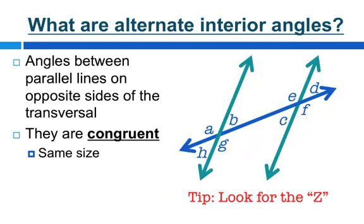The first thing we have to know is what our interior angles are. Remember, interior just means inside. Therefore, we're talking about what's on the inside of the parallel lines, or in between the parallel lines. But remember, we're talking about alternate interior angles, and alternate means switch sides — switch sides of the parallel lines and opposite sides of the transversal.